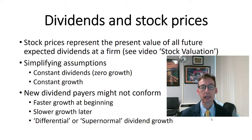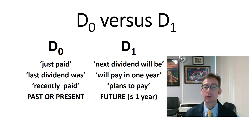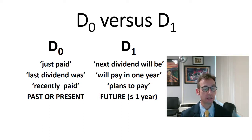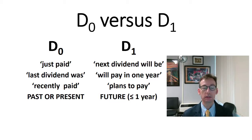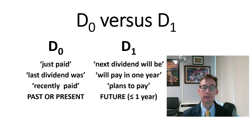There is a slick algebraic way to calculate the other models, but there is none for this one. The first thing we have to do is learn how to read these problems and determine what we're being told. If you've got D0, you'll see words like 'just paid,' 'the last dividend was,' or 'recently paid.' And if you're given D1, the dividend at time one, it would be 'the next dividend will be,' 'will pay in one year,' or 'plans to pay.' Anything in the future less than or equal to one year is D1, and anything past or present is D0.